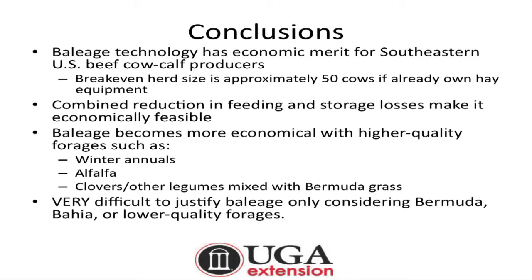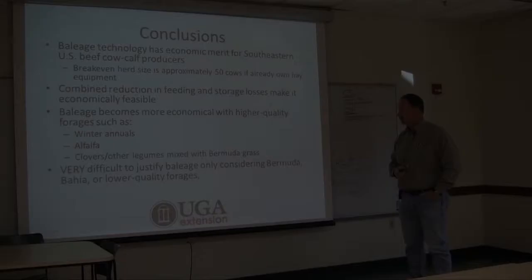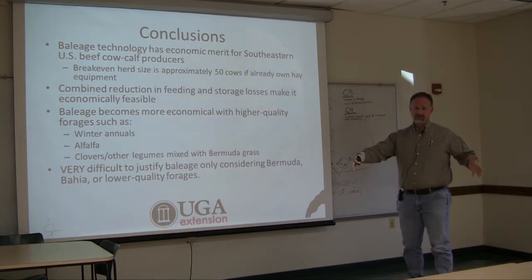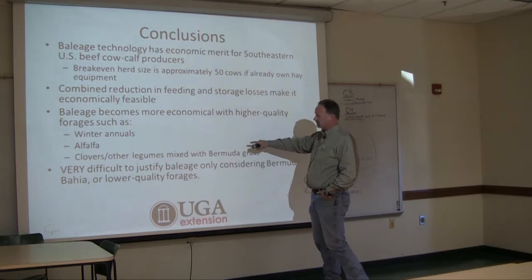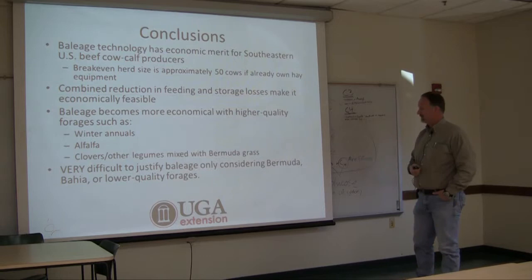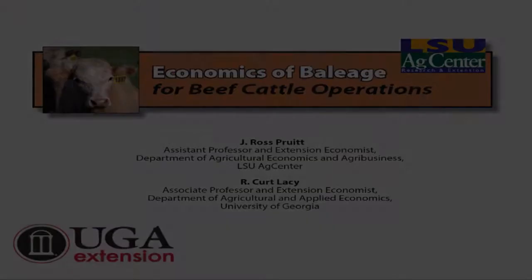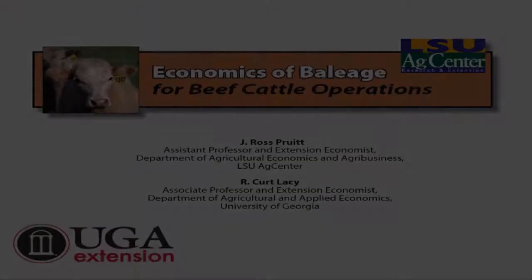Keep in mind that some forages — even with improved harvesting timing — see greater quality improvements than others. Winter annuals, alfalfa, clovers, and legumes mixed with bermudagrass, or bermudagrass-alfalfa baleage, are high quality products. It's very difficult to justify baleage for bermudagrass, bahiagrass, or other typically lower quality forages. For more information, a publication by Dr. Pruitt and myself is available on the LSU AgCenter website: 'The Economics of Baleage.'